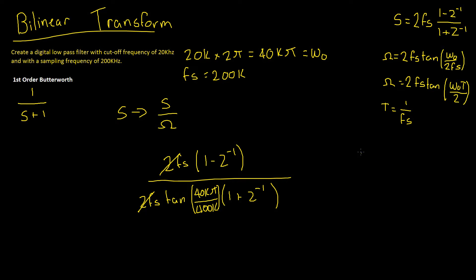Let's quickly calculate that now. Tan of 40k pi divided by 400k boils down to pi divided by 10, and that one's equal to 0.3249, but let's round up to 5, just for simplicity.